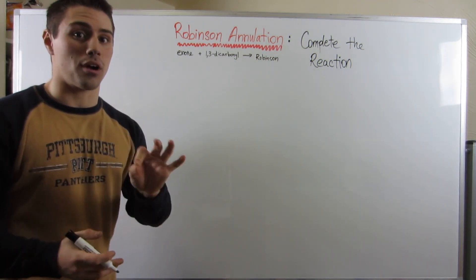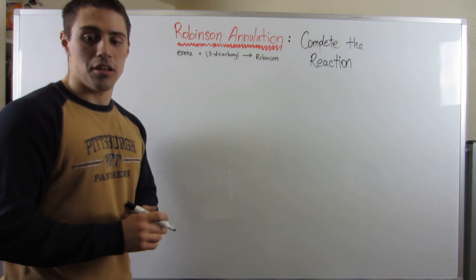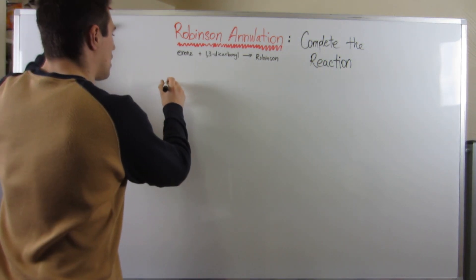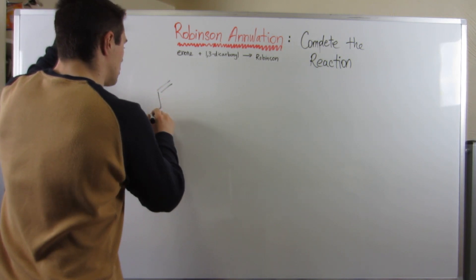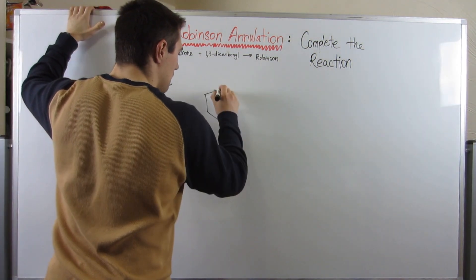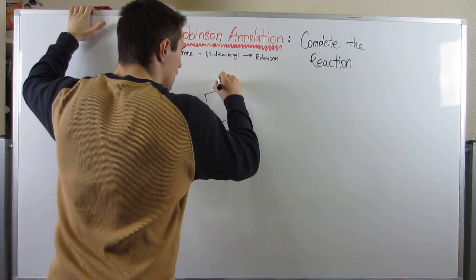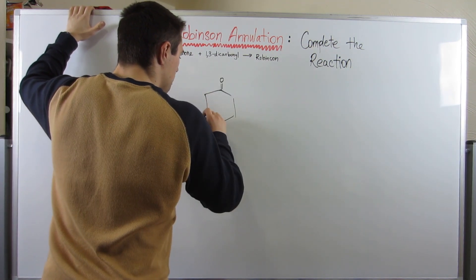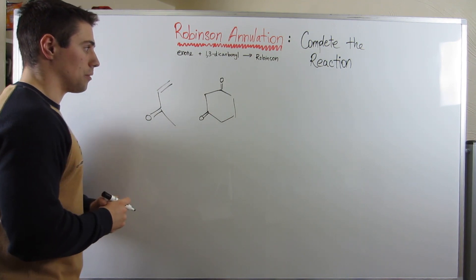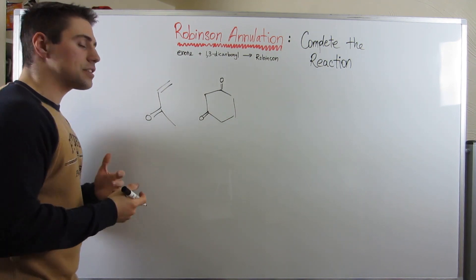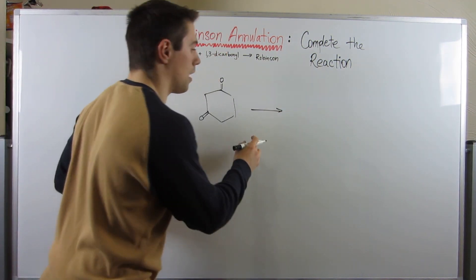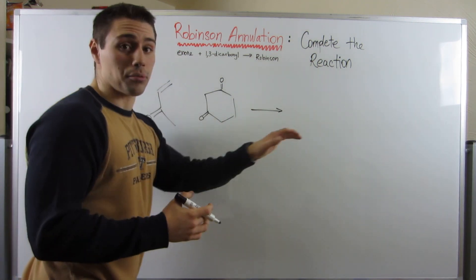Plus, I have tons of problems for you on the worksheet about this. So let's go back to that stock Robinson annulation I drew the mechanism with for you guys. Remember, this was our enone, obviously, and here's our dicarbonyl. Here's how I've learned to predict the product of a Robinson annulation.